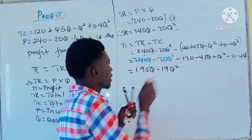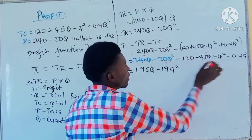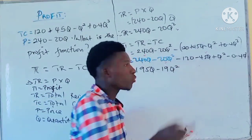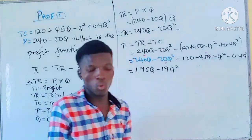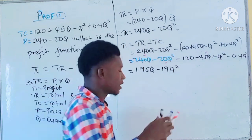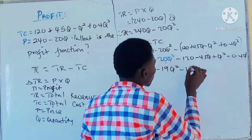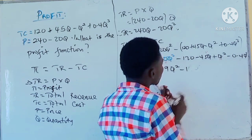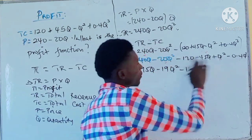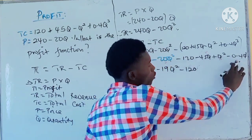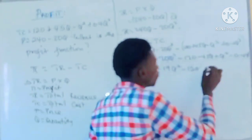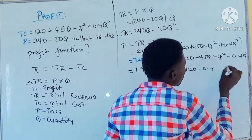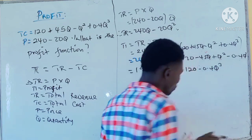For the constant term, there is no other constant to pair with, so we maintain minus 120. For the Q cubed term, there is also no pair, so we maintain minus 0.4Q cubed.